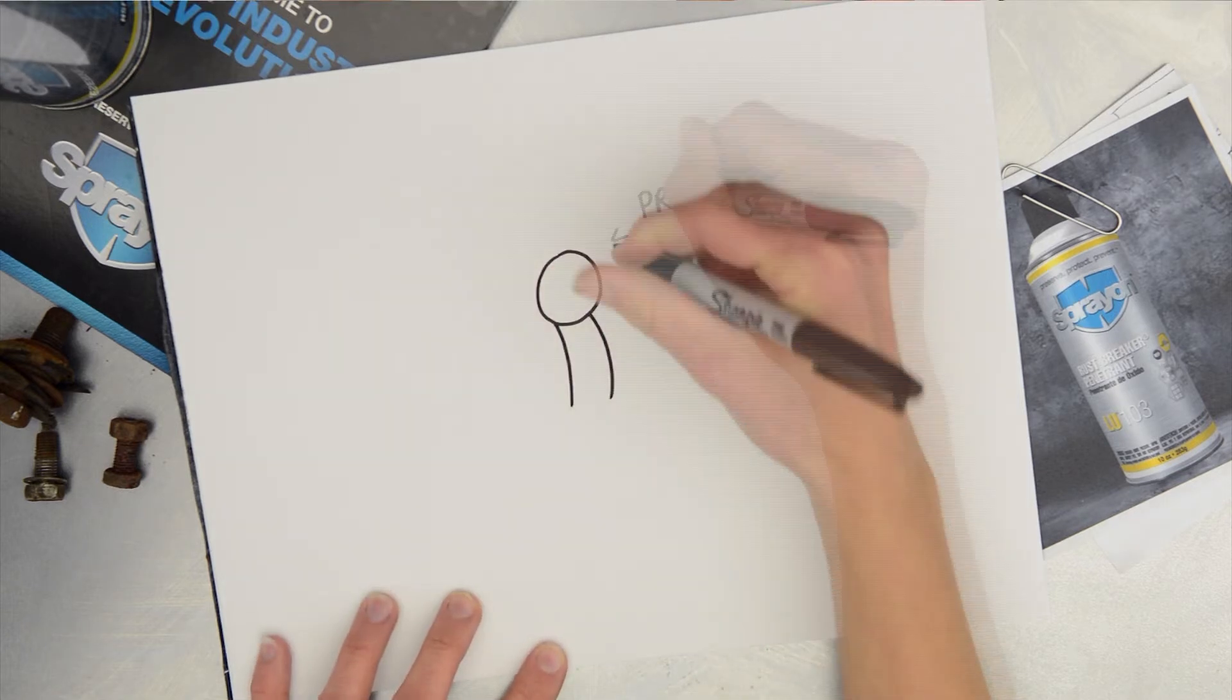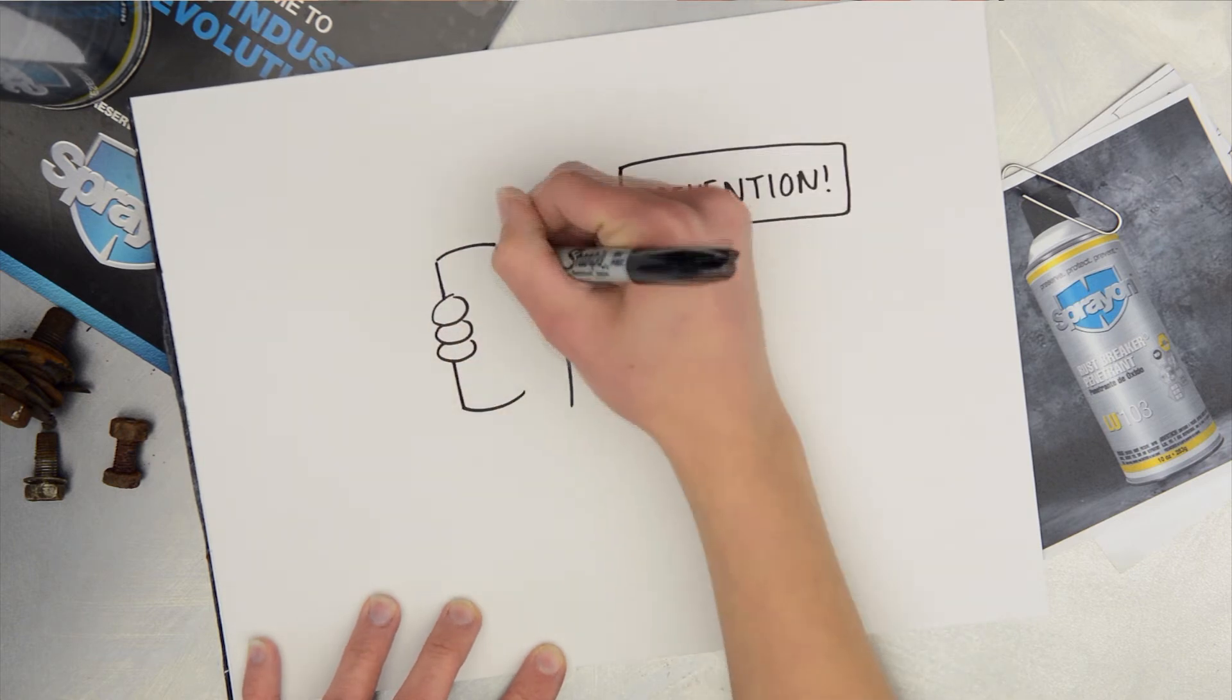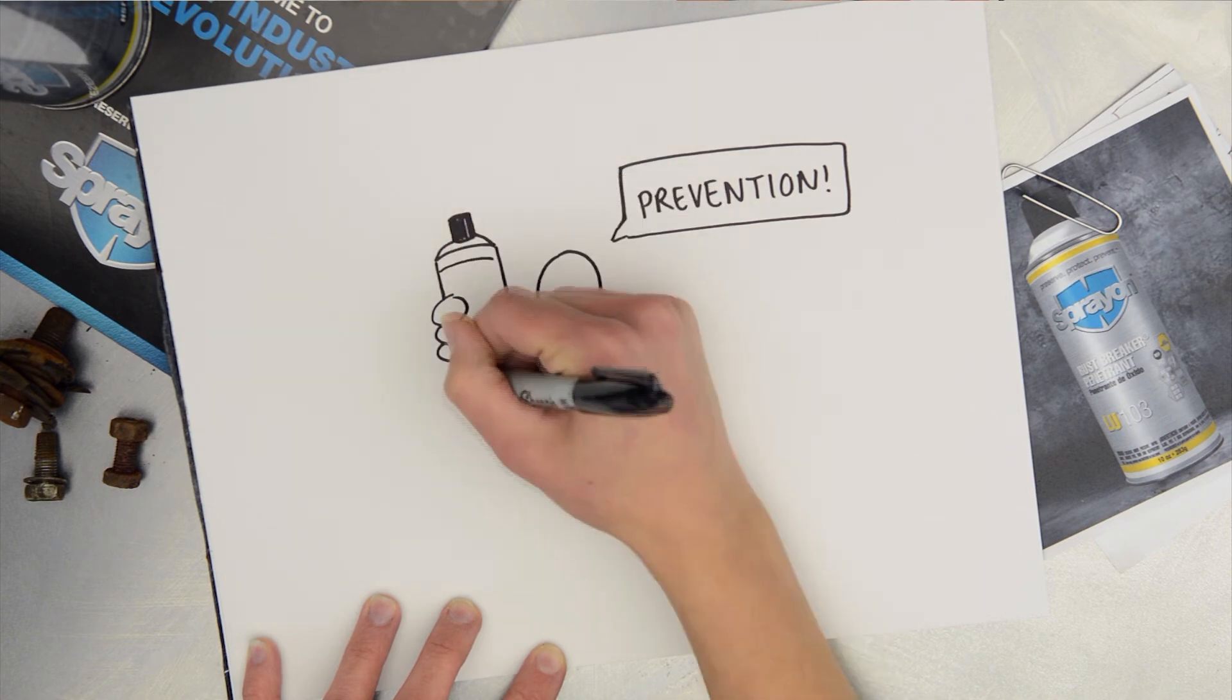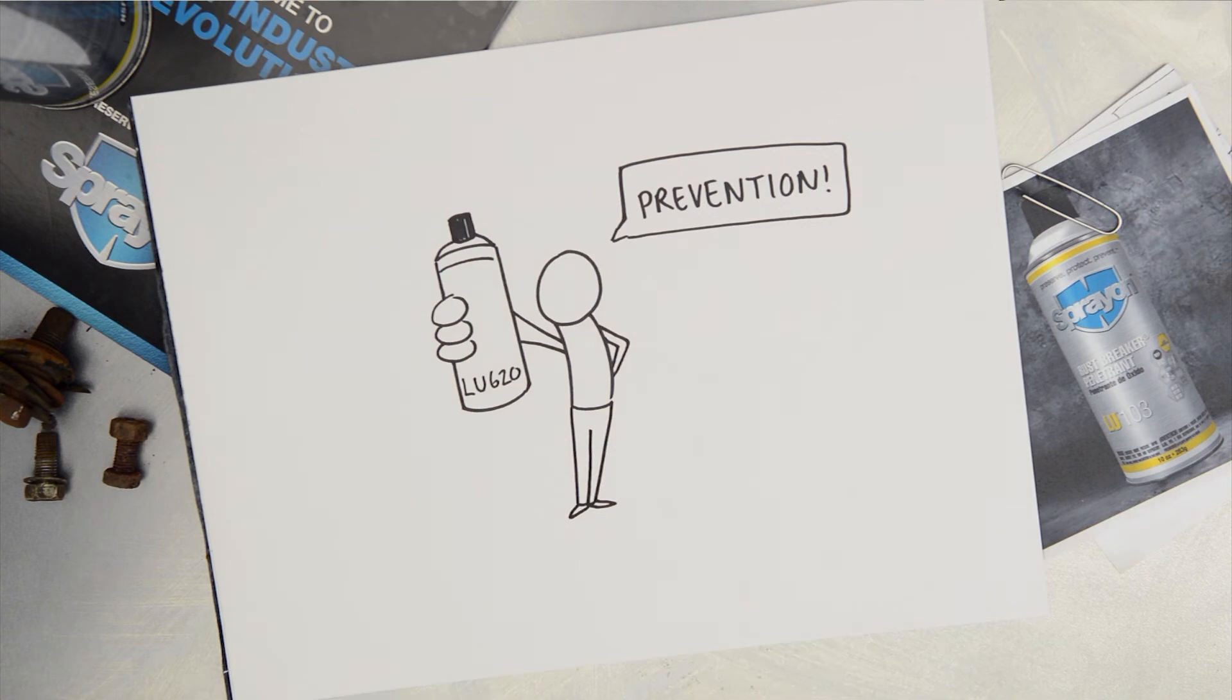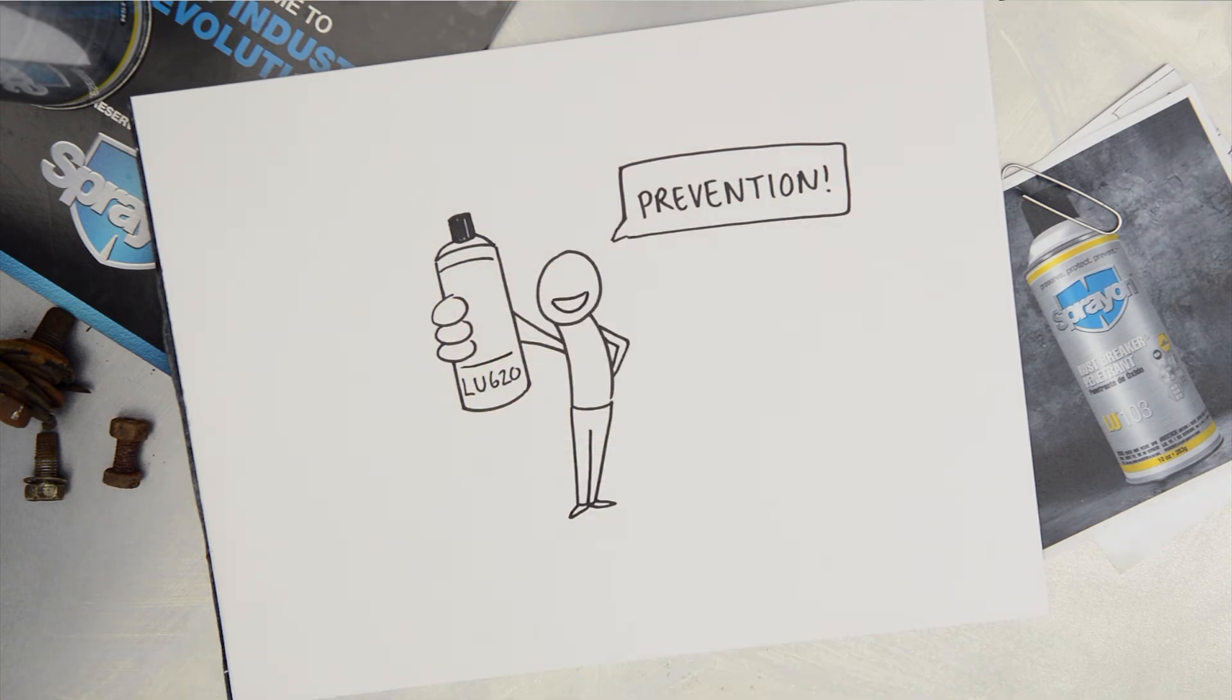Naturally, prevention is the best strategy for dealing with frozen bolts. That is, don't let them get to the point where they're frozen in the first place. A good anti-seize, like spray-on LU-620 anti-seize compound, will keep your bolts and other metal parts from seizing up, but that's another video, which you can check out right here.